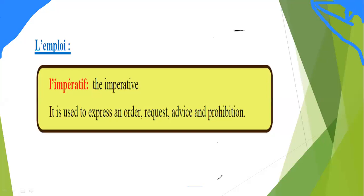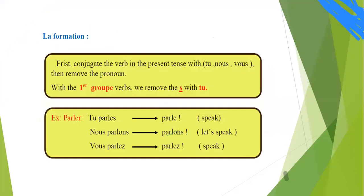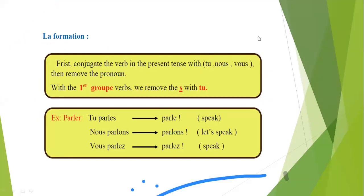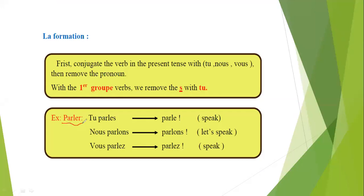Let's see the next page. Now, let's see some examples and see how we will make it. We have to conjugate the verb in the present tense with only three subject pronouns: tu, nous, and vous. Then we have to remove the pronoun. Let's see with the verbs of the first group. What do we know about the verbs of the first group? They all end with E-R. Like here, verbe parler.